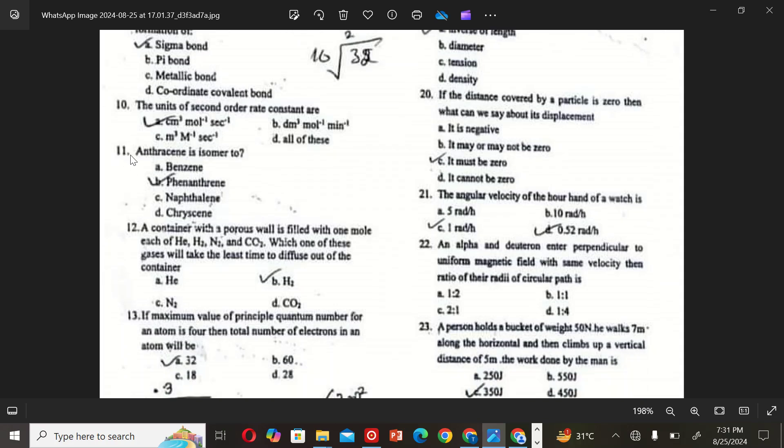The next MCQ is: A container of porous wall is filled with one mole each of helium, hydrogen, nitrogen, and CO2. Which one of these gases will take the least time to diffuse out of the container? A: helium, B: H2, C: N2, and D: CO2. The correct option is B, H2.